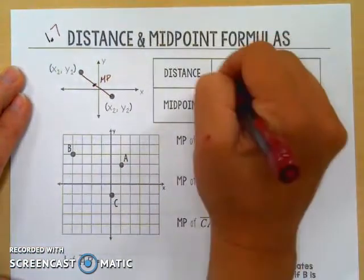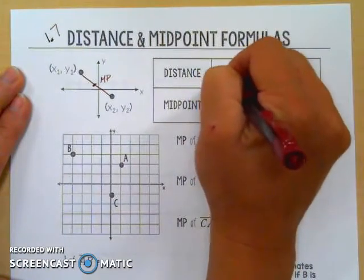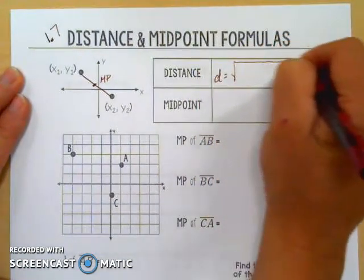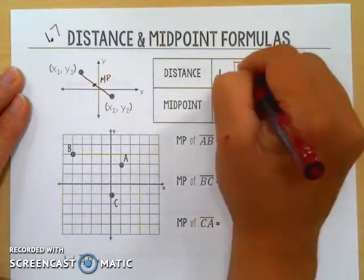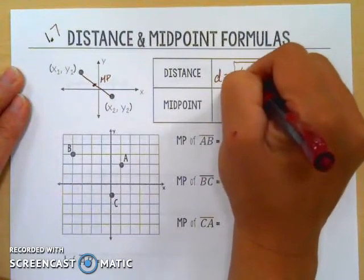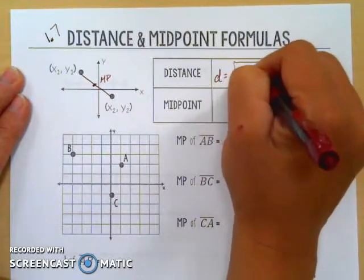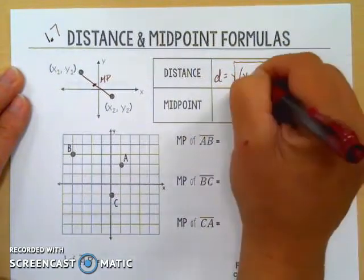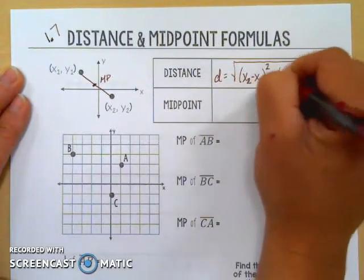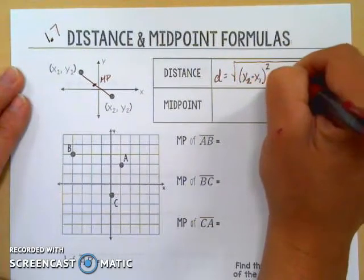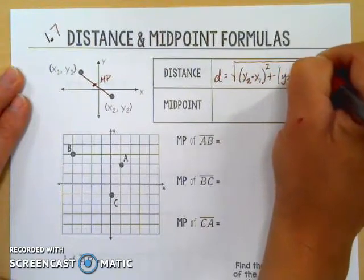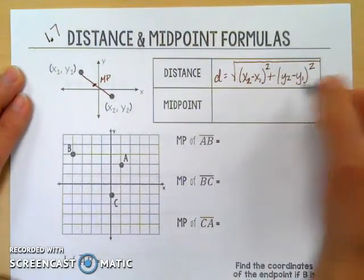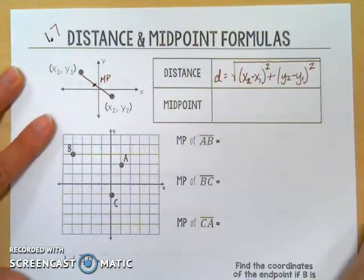The distance formula — lowercase d for distance — is the square root of: we take the x values, x2 minus x1, subtract them and square that difference, plus y2 minus y1, subtract that and square the difference, then add those two parts together.